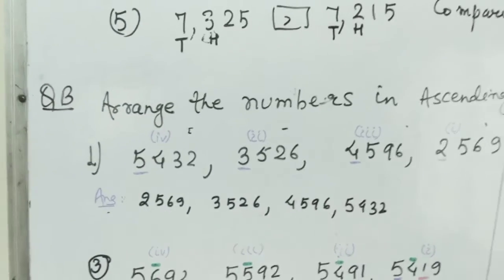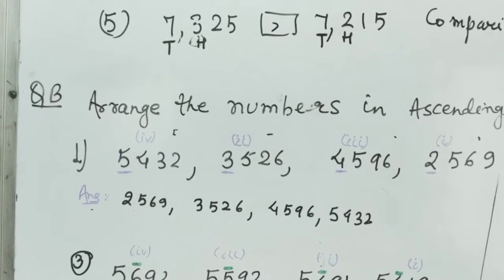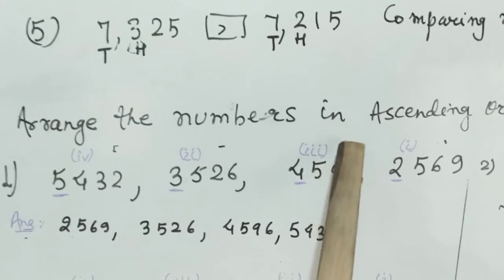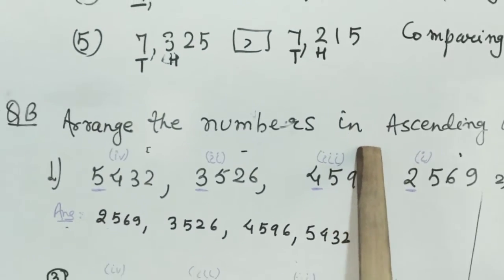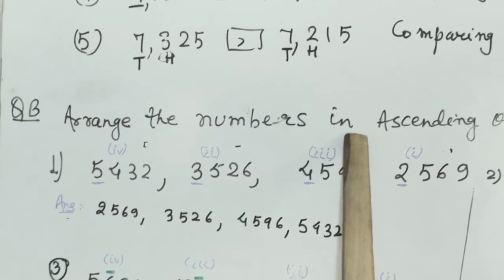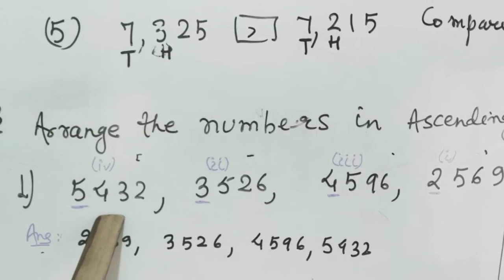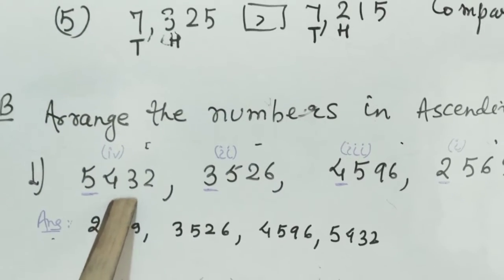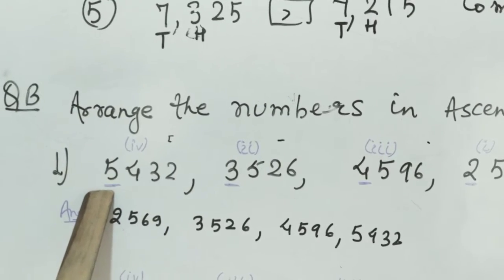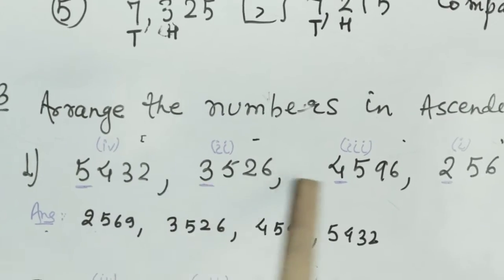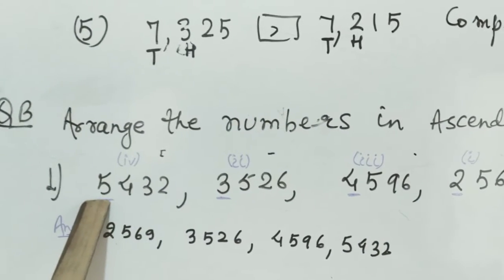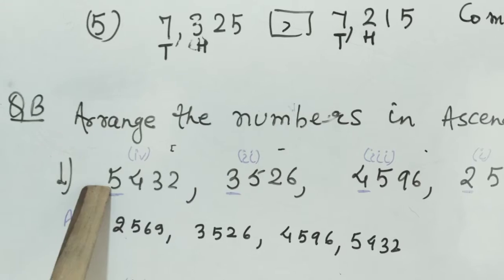We are going to revise the concept learned in the previous video, and here we are arranging the numbers in ascending order. These are all 4-digit numbers and we are comparing the numbers at the 1000 place. Here it is 5, here it is 3, here it is 4, here it is 2. We know that 5 comes at the last.